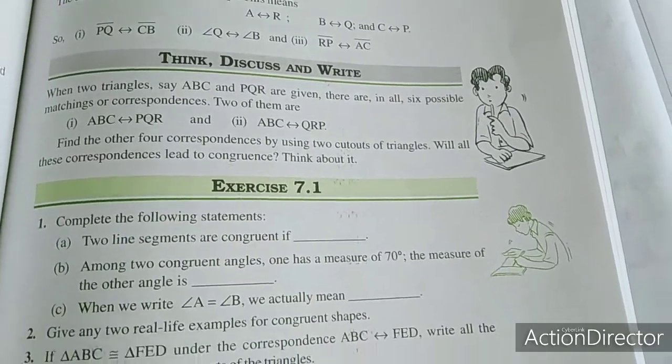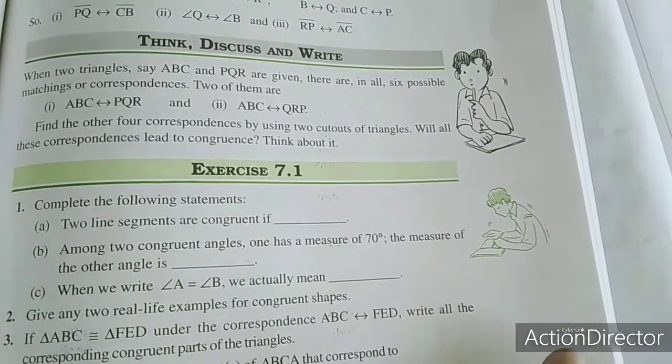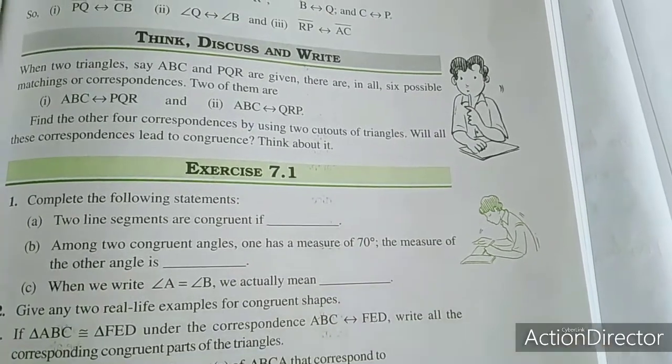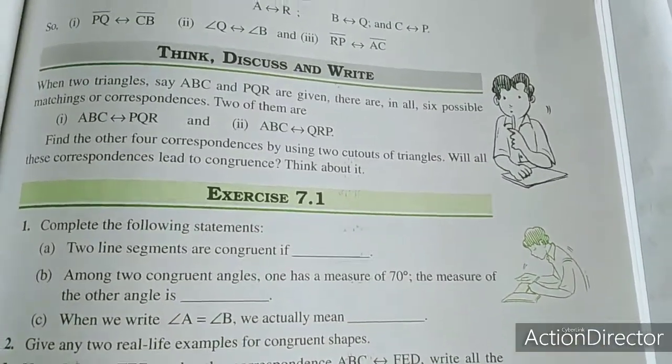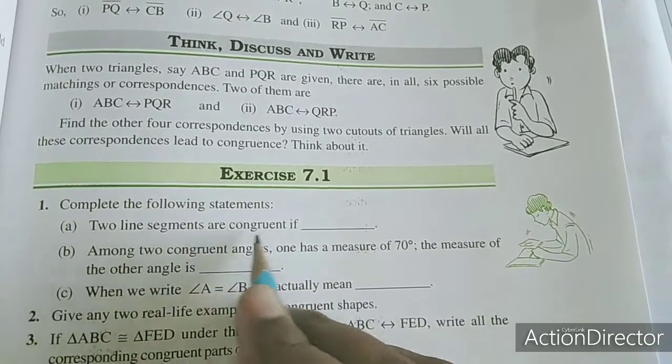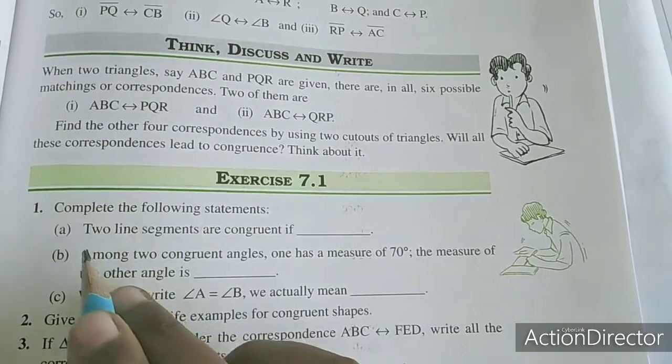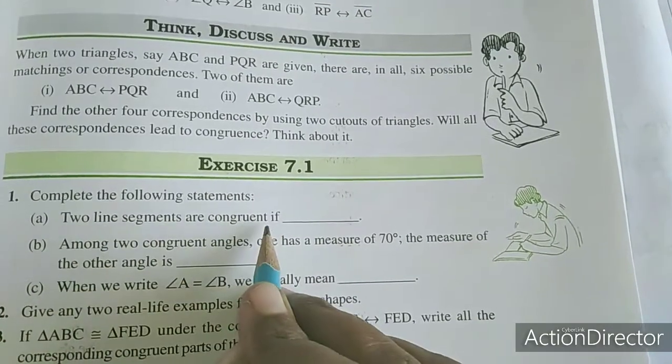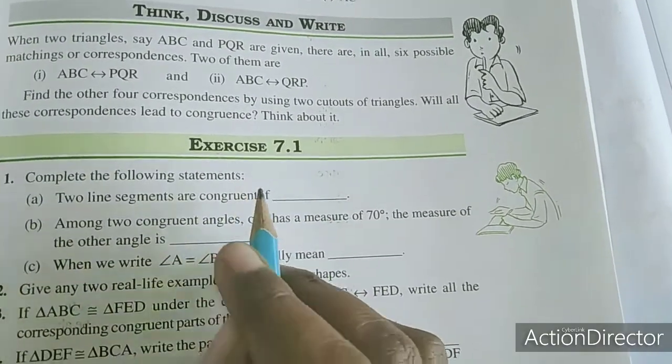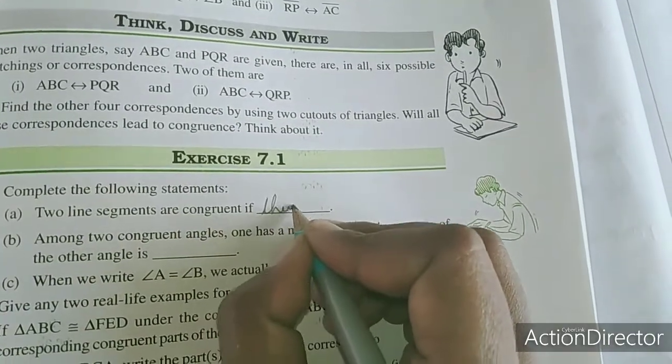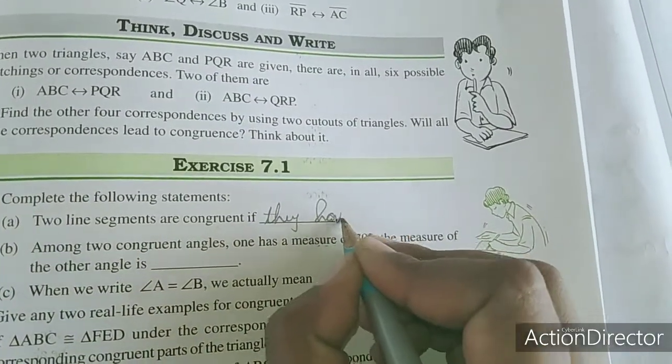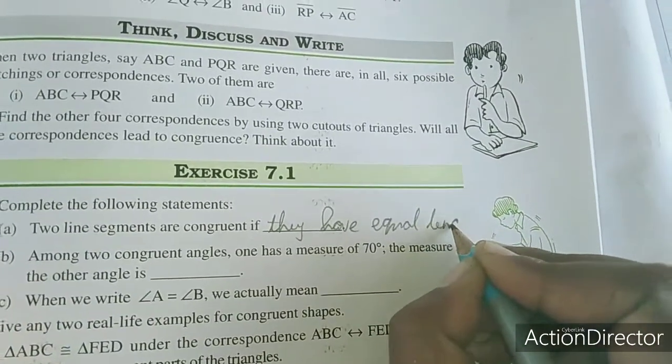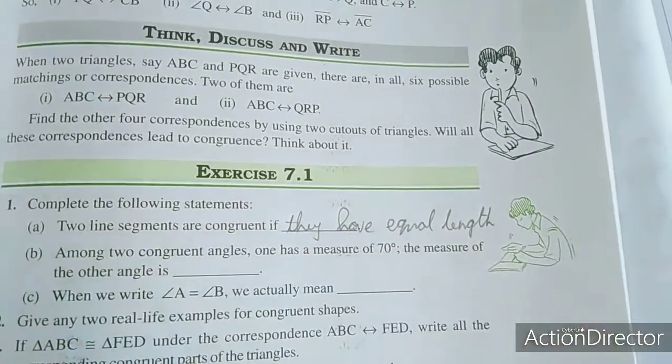Now we will move to the exercise. Congruent means same length. First problem: complete the following statements. If two line segments are congruent, then they have equal length. Length is equal means congruent.